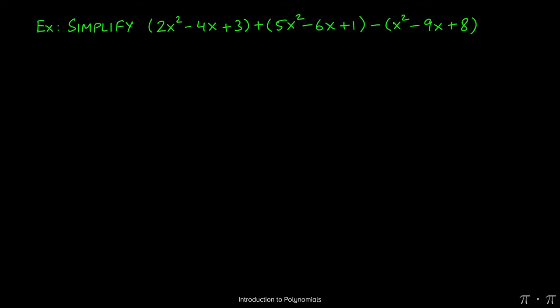Let's say we're asked to add and subtract the given polynomials: 2x squared minus 4x plus 3, plus the quantity 5x squared minus 6x plus 1, minus the quantity x squared minus 9x plus 8.